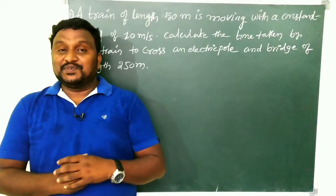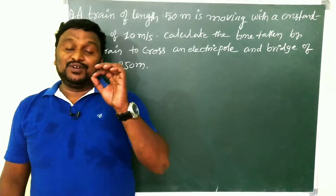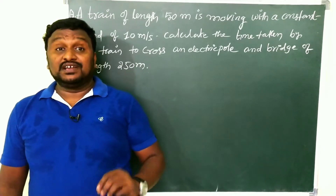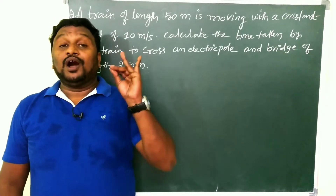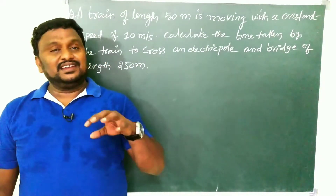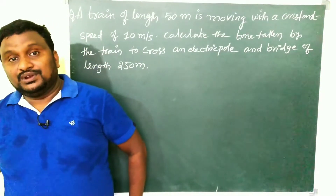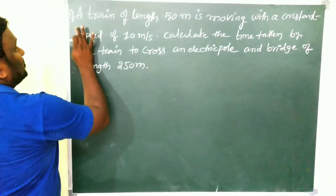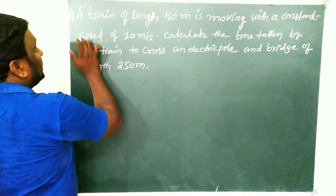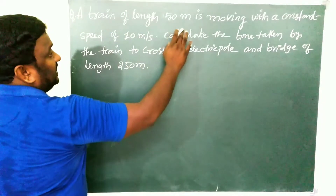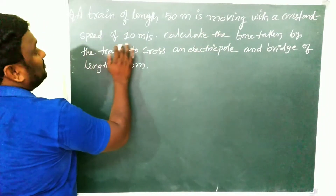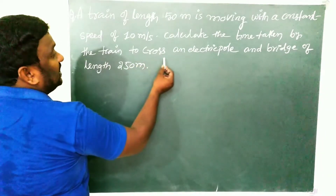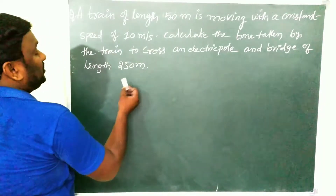Hi children, in this video we are going to discuss one of the interesting problems in the second chapter — application of concepts, third problem. It's an interesting and important problem. Look here, there is a problem waiting for us on the board. We have to read the question very carefully: a train of length 50 meters is moving with a constant speed of 10 meters per second. Calculate the time taken by the train to cross an electric pole and a bridge of length 250 meters.